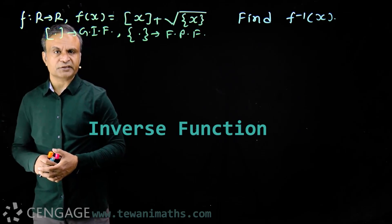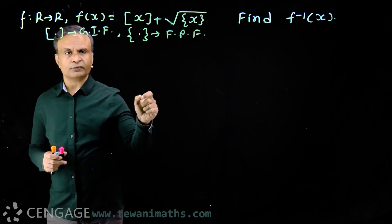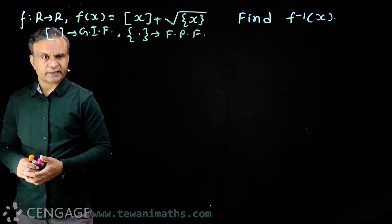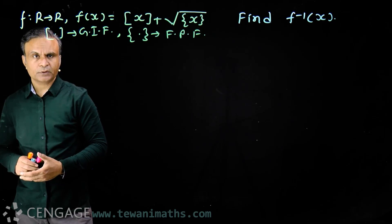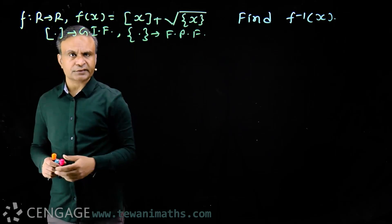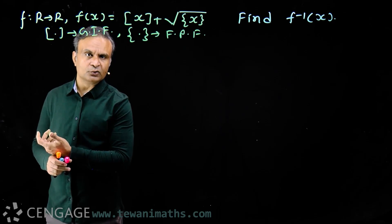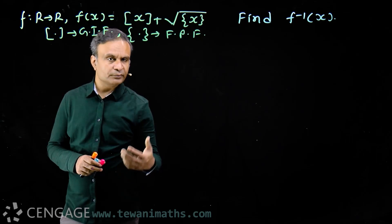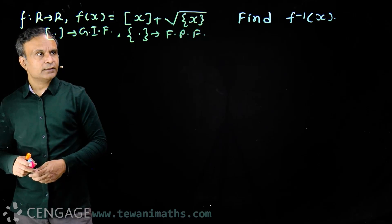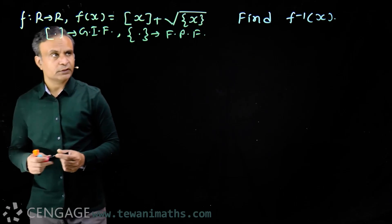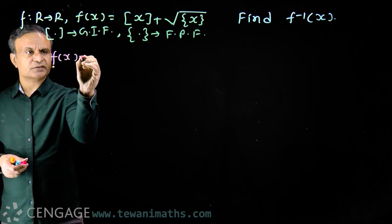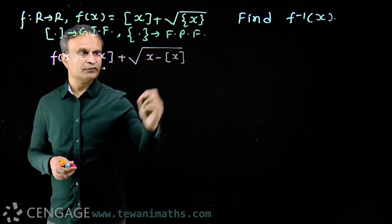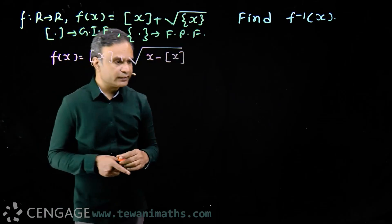We have a function f from ℝ to ℝ where f(x) = ⌊x⌋ + √({x}), that is, the greatest integer of x plus the square root of the fractional part of x. We have to find f⁻¹(x). First, let's verify that f(x) is one-one and onto. The domain is clearly ℝ, since for any x the greatest integer is defined and the fractional part is always non-negative, so its square root is also defined.